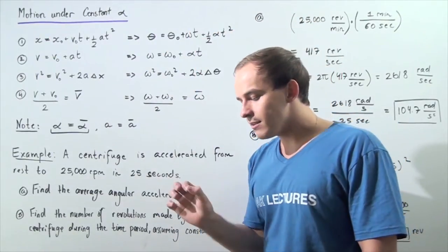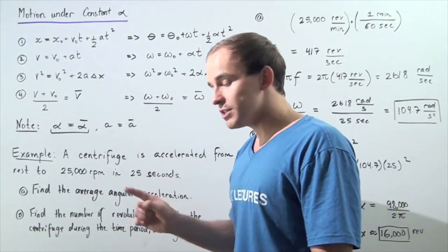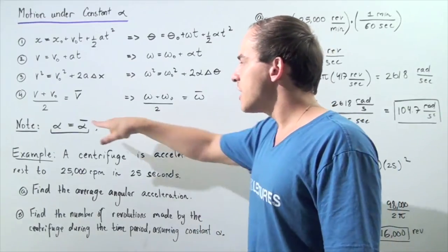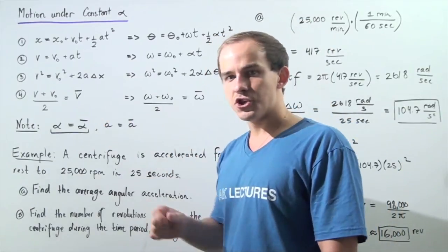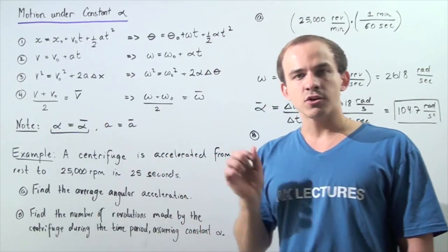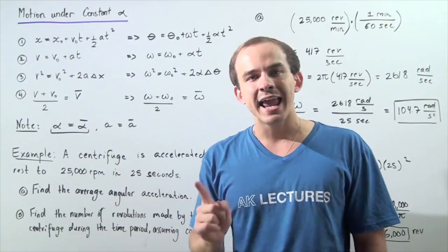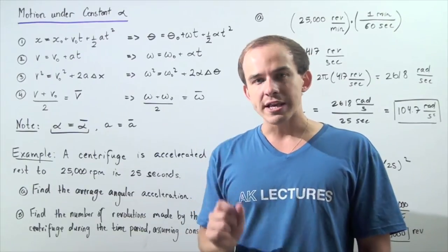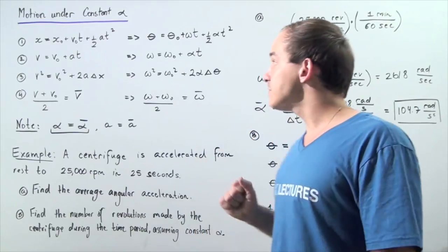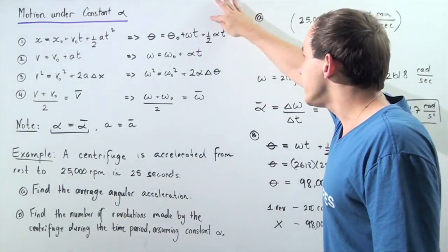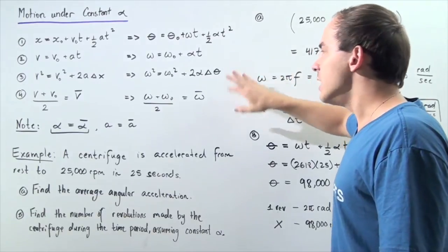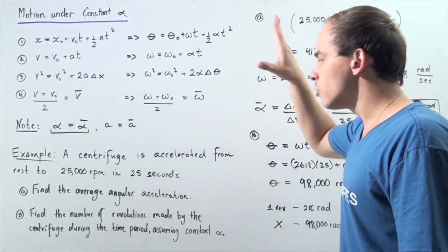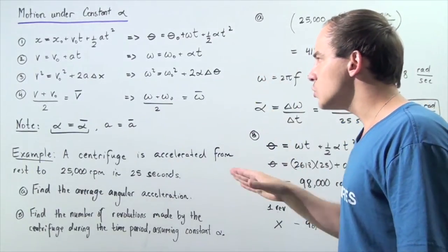If the angular acceleration is constant, that means the average angular acceleration is equal to the instantaneous angular acceleration. And that means we can obtain the following four kinematics equations for angular motion.